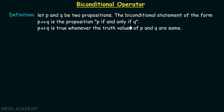Why is it called biconditional? As the name itself suggests, it is the combination of two conditional statements — that is, P implies Q and Q implies P. In the case of the conditional operator it is P implies Q, whereas in the case of the biconditional operator it is P implies Q and Q implies P. As simple as that.